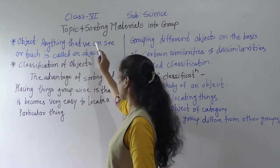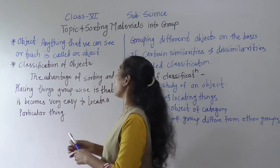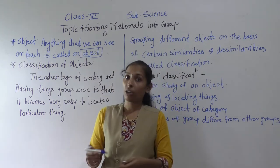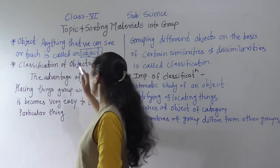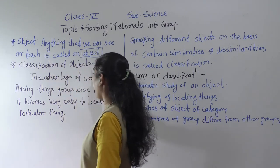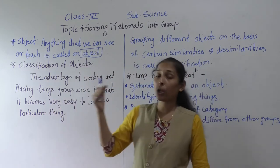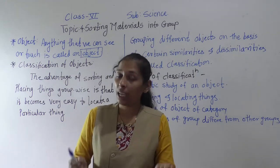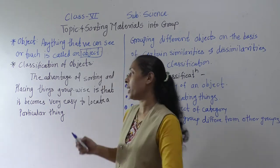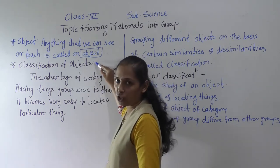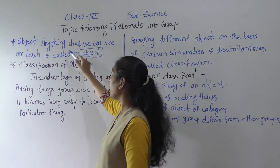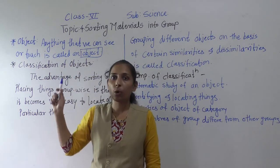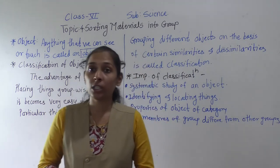So what is meant by an object? Anything that we can see or touch is called an object. This is the definition of an object. All the objects around us we can see and also touch, and that is why they are called objects.